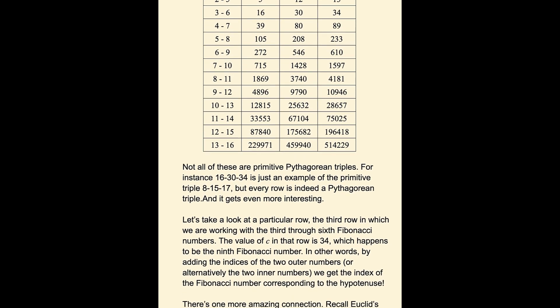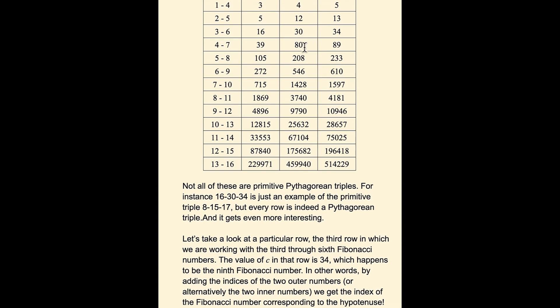by adding the indices of the two outer numbers, or alternatively the two inner numbers, we get the index of the Fibonacci number corresponding to the hypotenuse, or the C value. That, I think, is completely astounding, and that works for all of these.